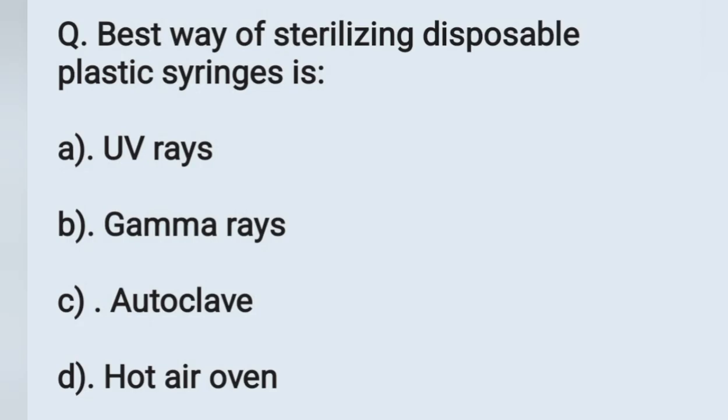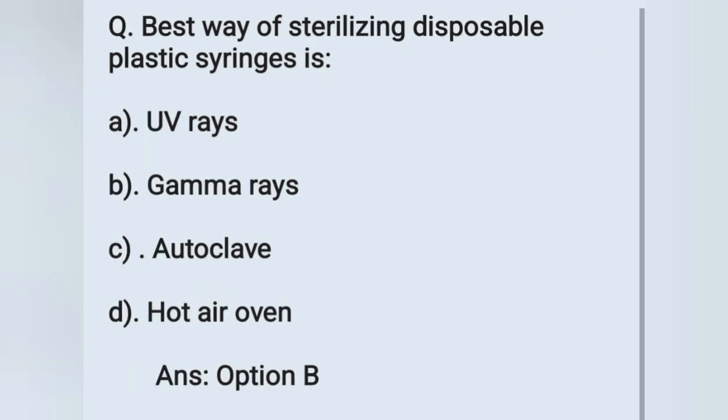The next question: Best way of sterilizing disposable plastic syringes is — option A: UV rays, option B: gamma rays, option C: autoclave, option D: hot air oven. Disposable plastic syringes are sterilized by using gamma rays. Option B is the correct answer.